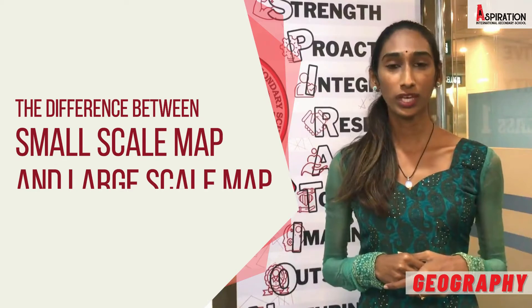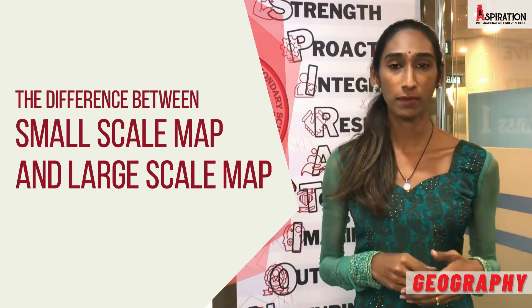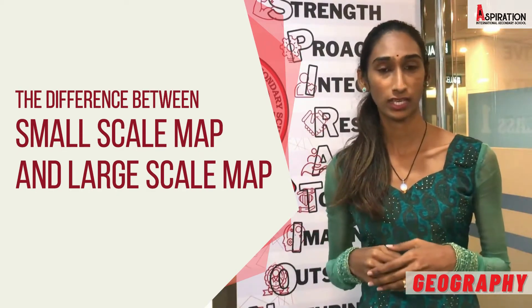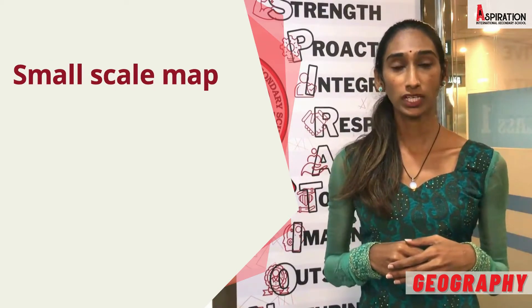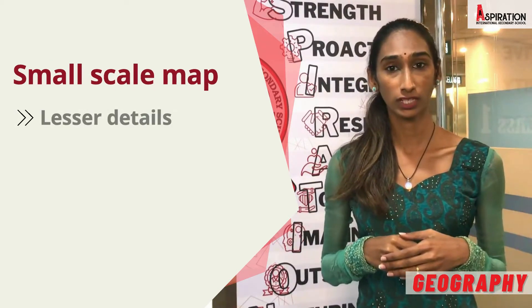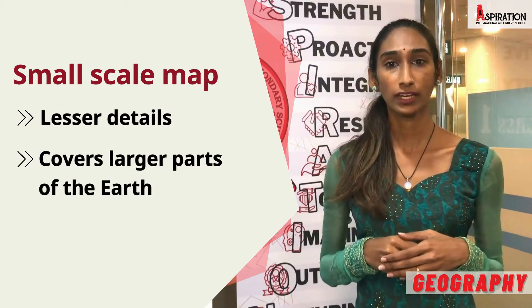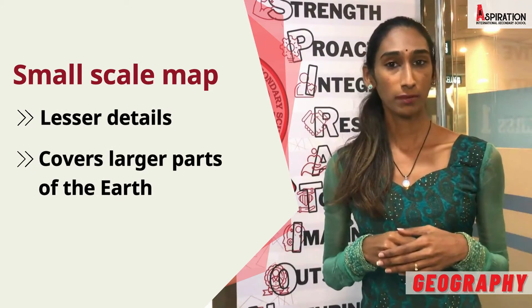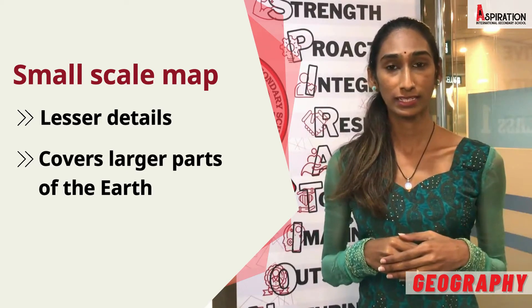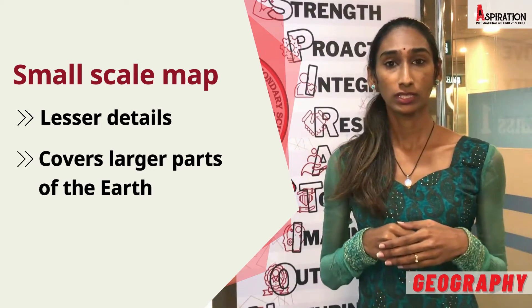Hi everyone, today I am going to explain the difference between small scale map and the large scale map. A small scale map is one in which a given part of the earth is represented by a small area on the map. A small scale map generally shows less detail than the large scale map but covers the large part of the earth.